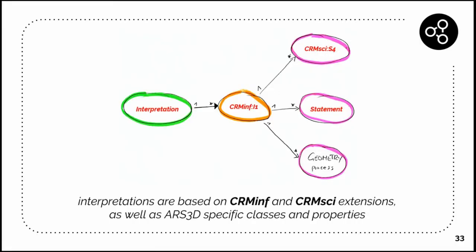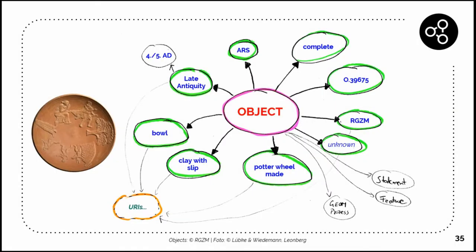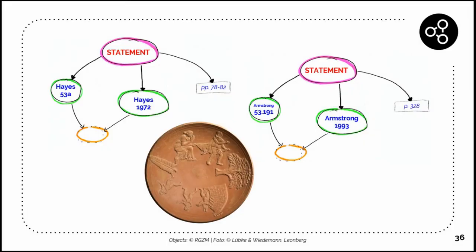If we map it to CIDOC-CRM, it will look like this. Just one quick example of what it looks like if we model this object here in our ontology. We have some object metadata: this object is maybe complete, has an identifier, is located in the RGZM. The production place is unknown, so we are not really certain about that. It's pottery made of clay with slip, it's a bowl, and it's produced maybe in late antiquity between the 4th and 5th AD. All of this is linked to some external resources.